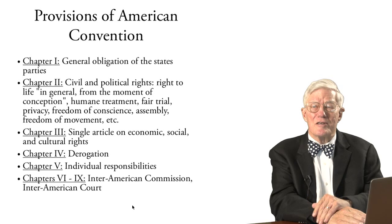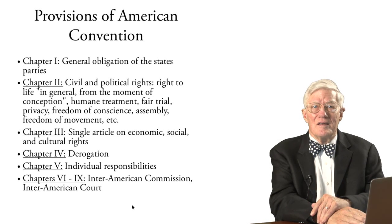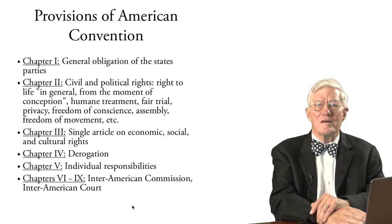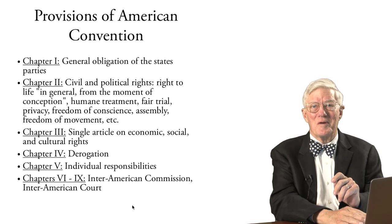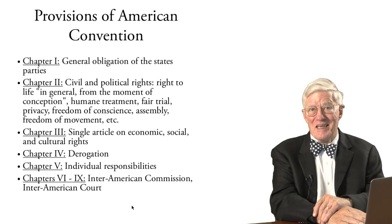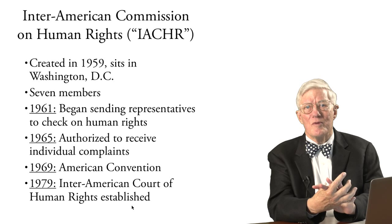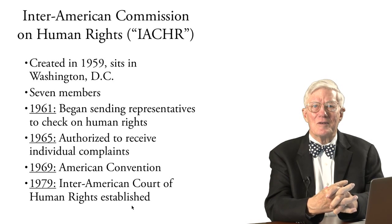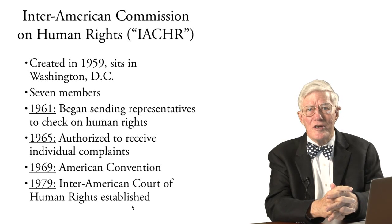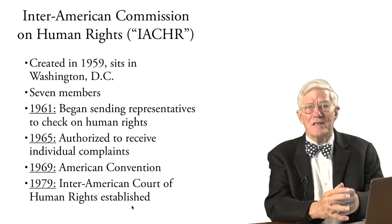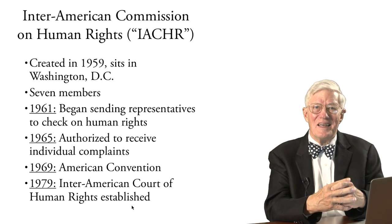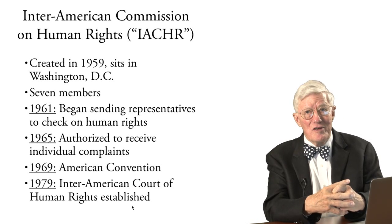Chapter 4 has a derogation provision similar to Article 15 of the European Convention, and Chapter 5 speaks to individual responsibilities. Chapters 6 through 9 recognize the Inter-American Commission and the Inter-American Court. The Inter-American Commission on Human Rights was created in 1959 and sits in Washington, D.C. with seven members. In 1961 it began sending representatives to check on human rights across American nations, and in 1965 it was authorized to receive individual complaints.